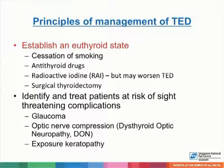The principles of management of thyroid eye disease are to establish a euthyroid state, which includes cessation of smoking and the use of antithyroid drugs, co-managed with an endocrinologist. Some patients may even require radioactive iodine; however, these patients need to be warned that sudden hypothyroidism following radioactive iodine may precipitate or worsen thyroid eye disease, and they may need adjuvant steroid cover. Patients may also require surgical thyroidectomy. It's also important to identify and treat patients at risk of sight-threatening complications, which include glaucoma, optic nerve compression, and exposure keratopathy from proptosis.